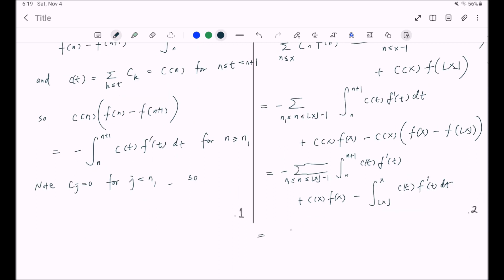So this is equal to c(x) times f(x) minus the integral from n₁ all the way to x, c(t) times f'(t) dt. And that finishes the proof of theorem 4.21.